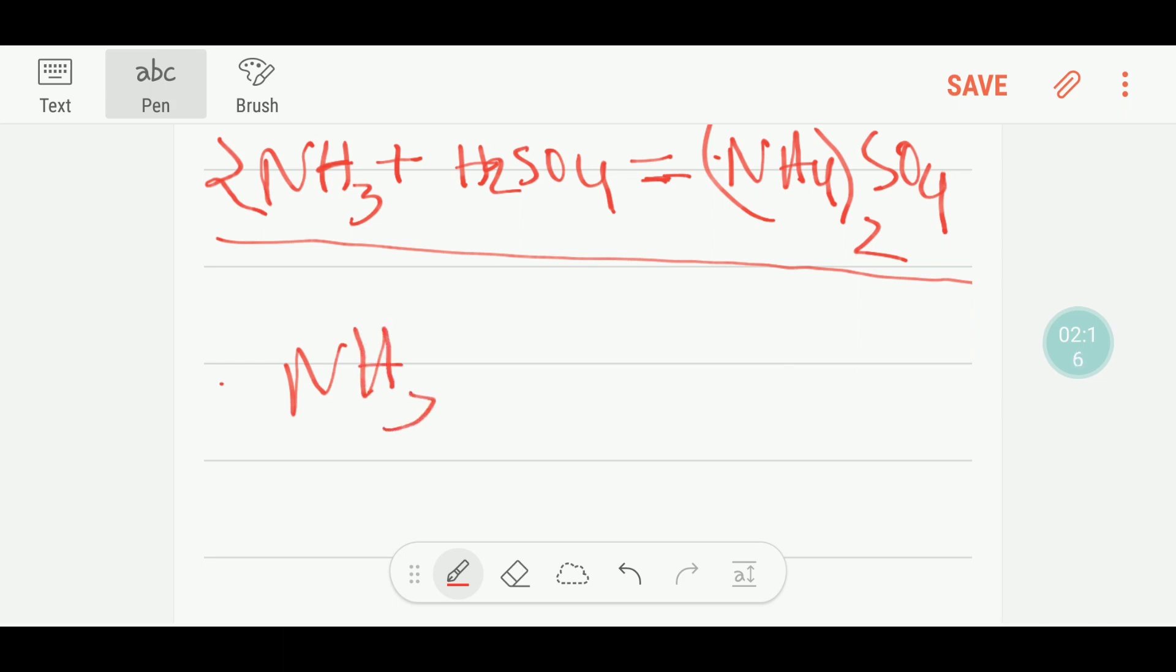You know that this is ammonia, this is sulfuric acid, and you get here ammonium sulfate. Here you have two nitrogen, so you have to put here two because this two nitrogen will come from here. If you put here two then everything is balanced.